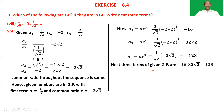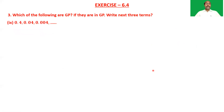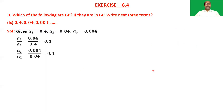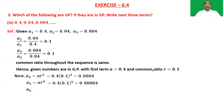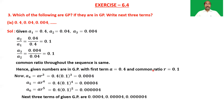Ninth sequence: 0.4, 0.04, 0.004, and so on. This is similar to the previous problems — the common ratio is constant at 0.1, so the terms are in GP.